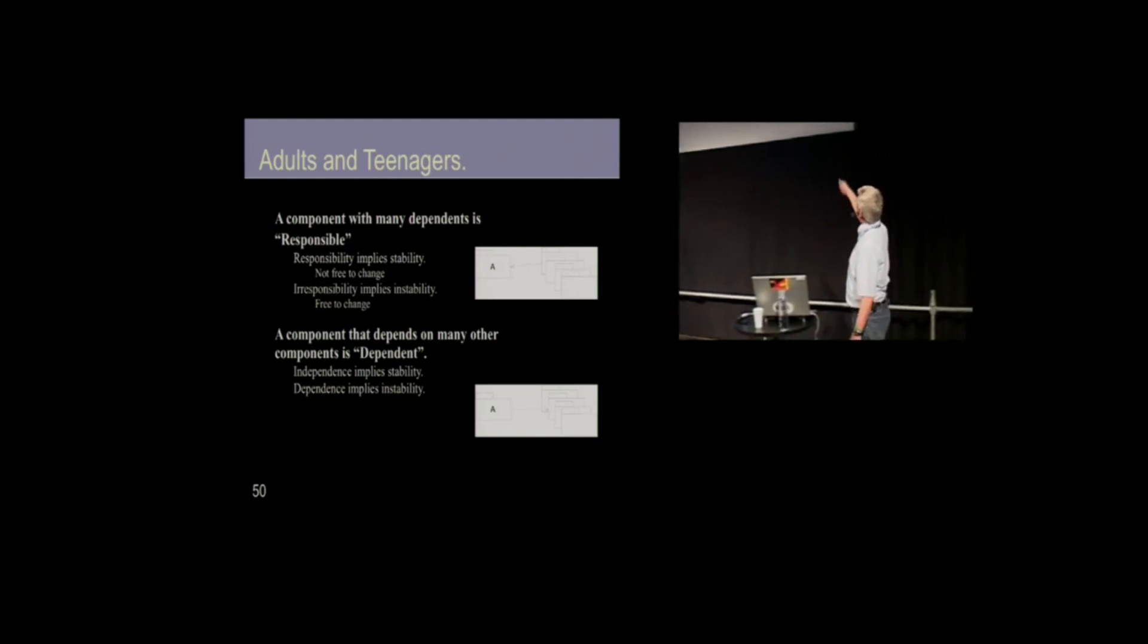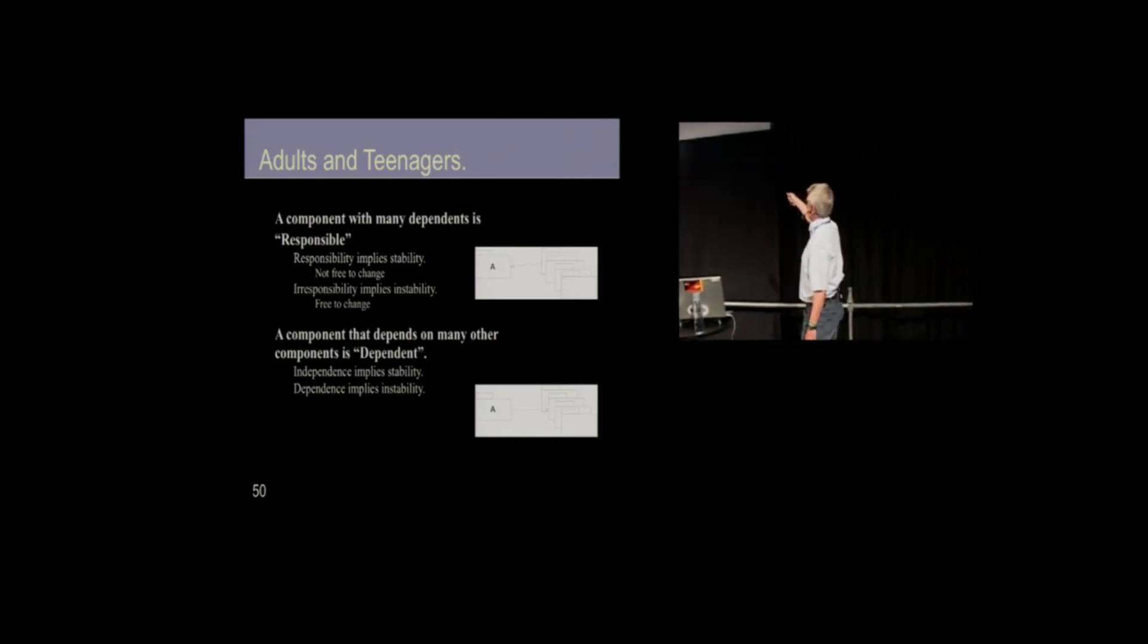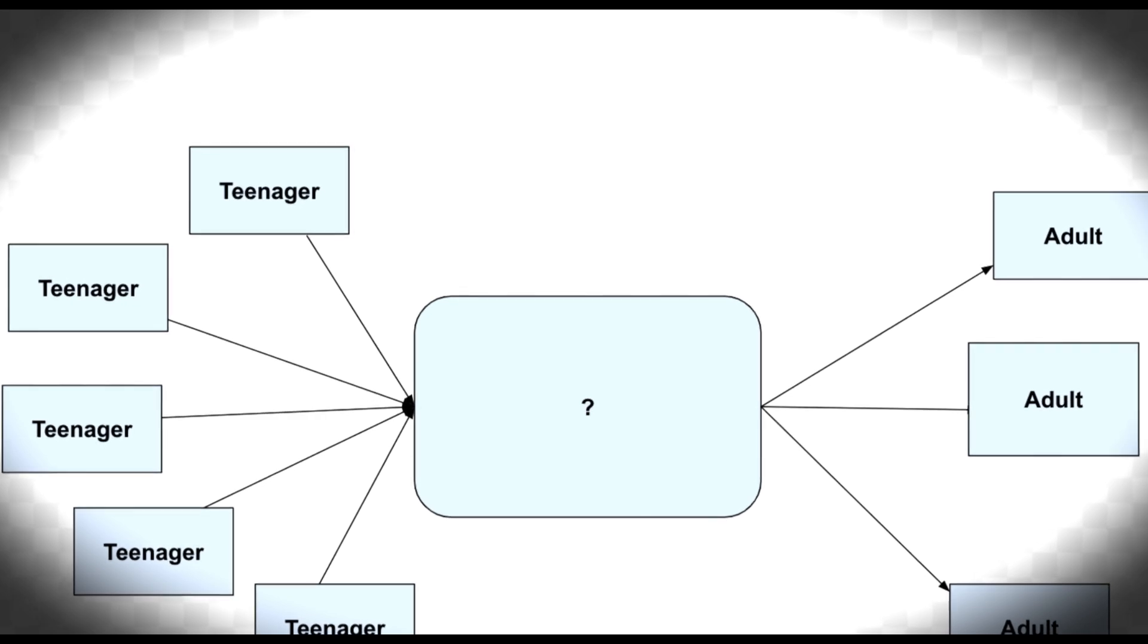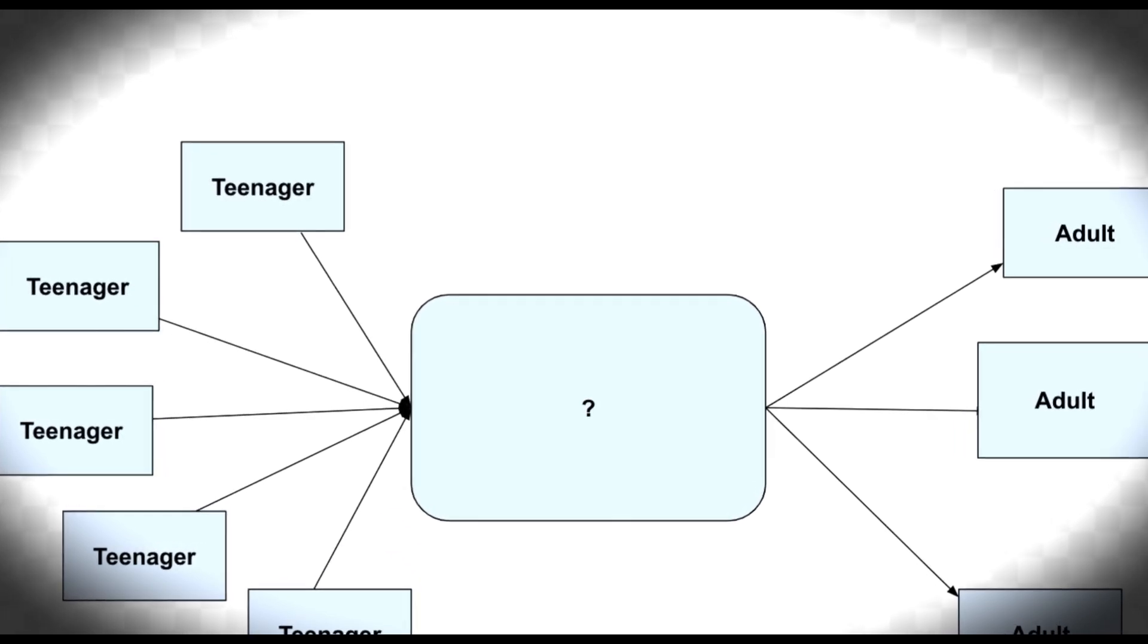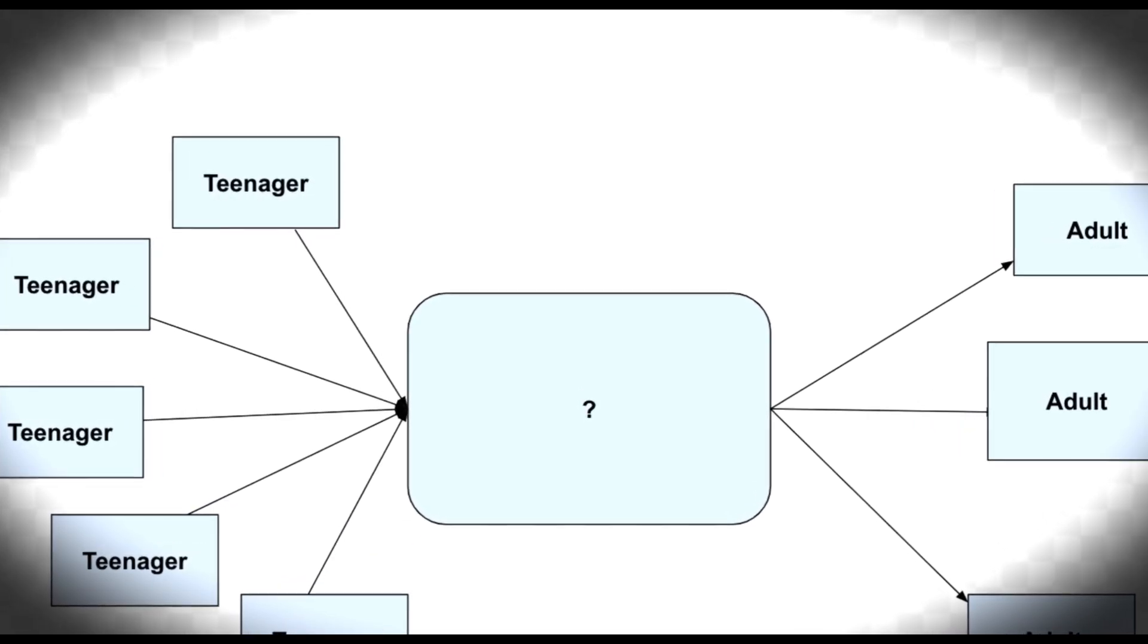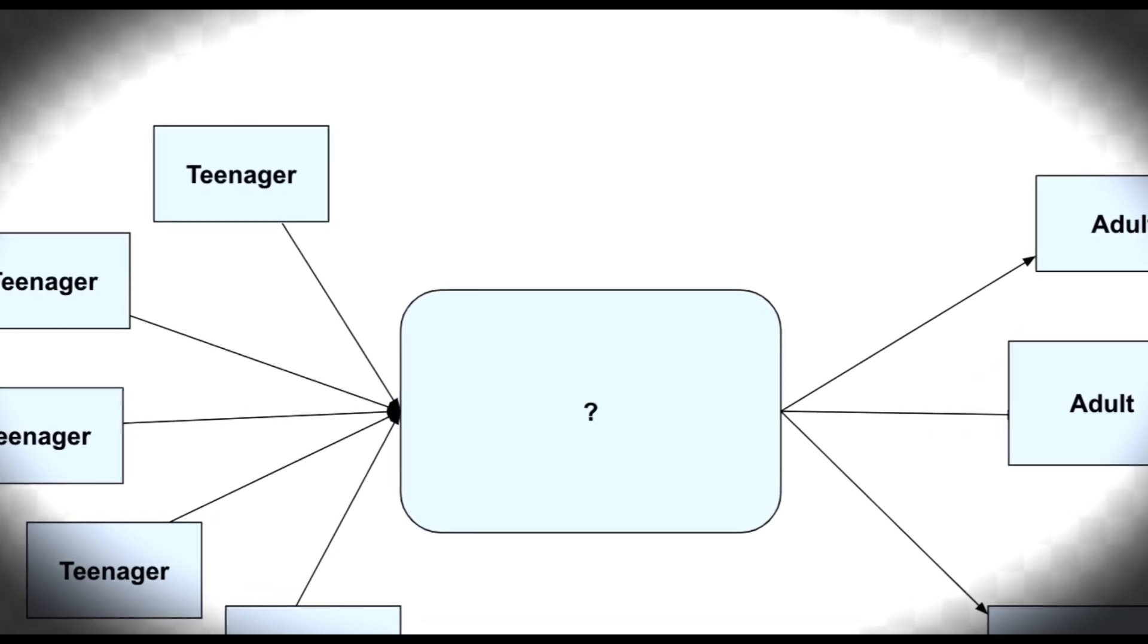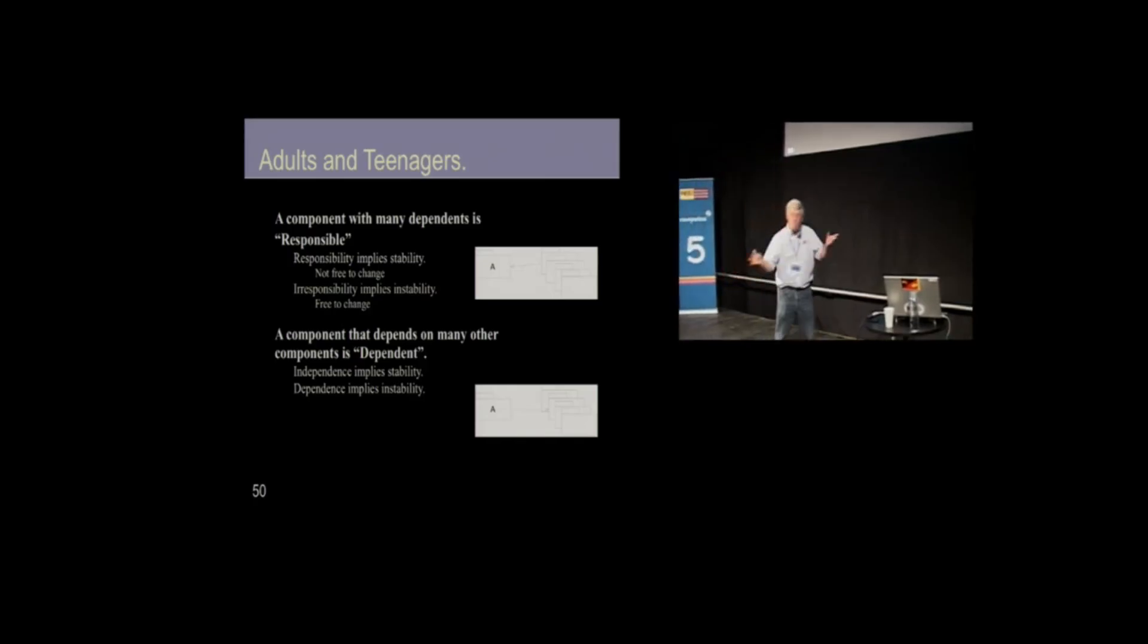We will have components of both kinds in our systems. Some of our components will be heavily depended upon. They will be stable, stable adults. And some of our components will depend heavily on others. They will be unstable teenagers, variable, changing their minds all the time.